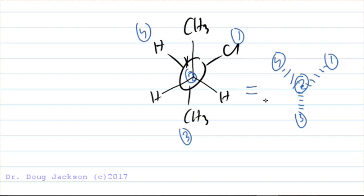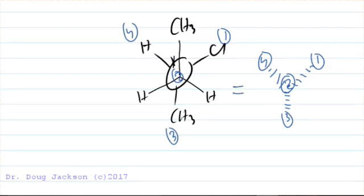The 1, 4, and 3 groups are going away from us. And since we've got our perspective lined up, this looks like 1, 2, 3 is counterclockwise here. 4 is going away from us, and so this is indeed the S enantiomer of 2-chlorobutane.